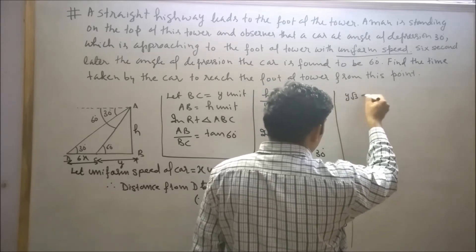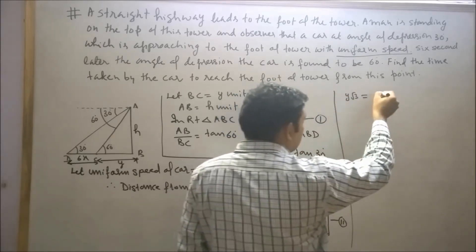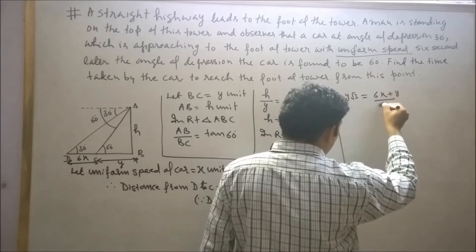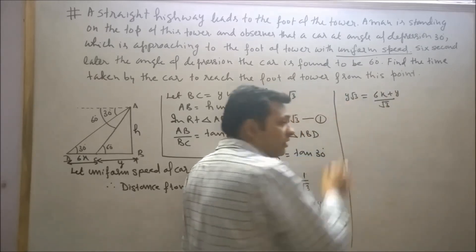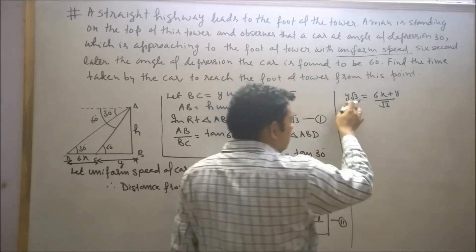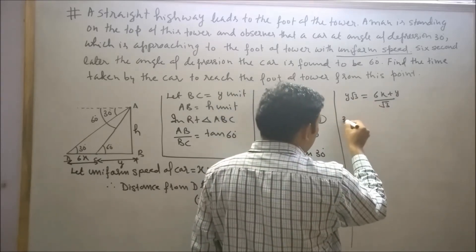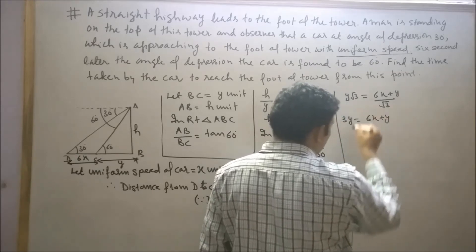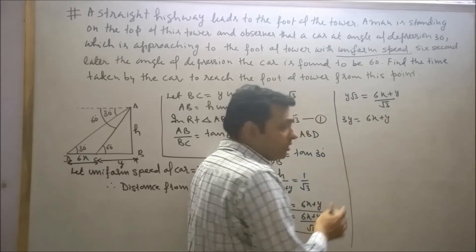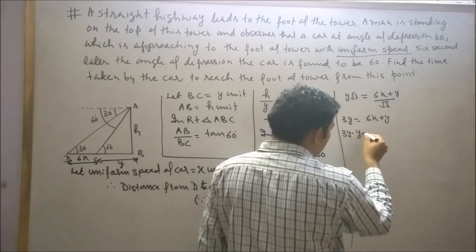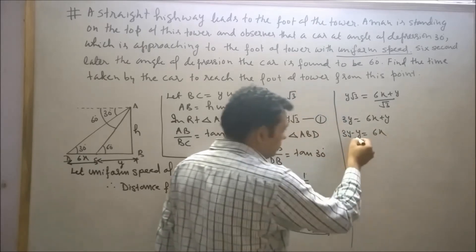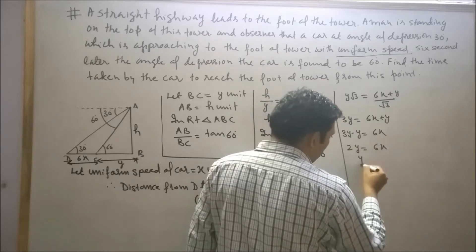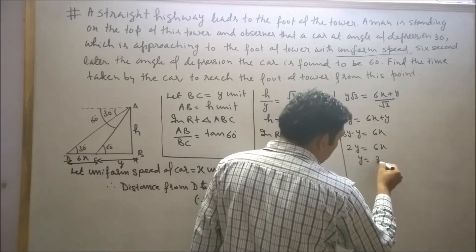Now equating equation 1 and equation 2: root 3 times y equals (6x + y) divided by root 3. Cross-multiplying: root 3 times root 3 times y equals 6x + y, so 3y equals 6x + y. Transposing y to the left-hand side: 3y minus y equals 6x, giving 2y equals 6x, and therefore y equals 3x.